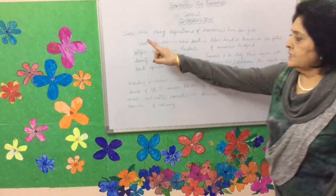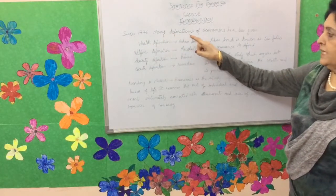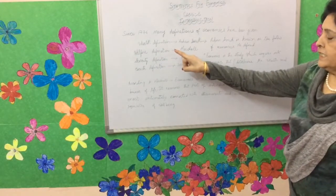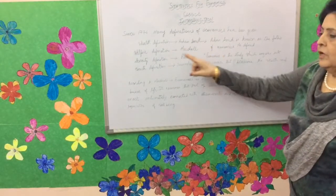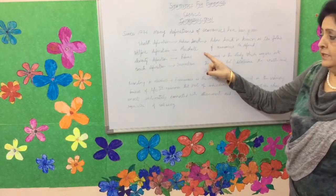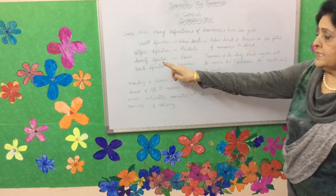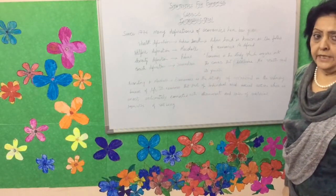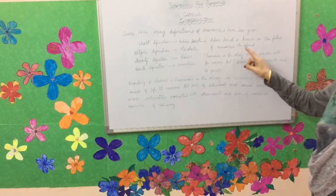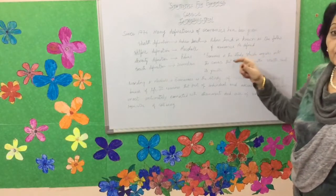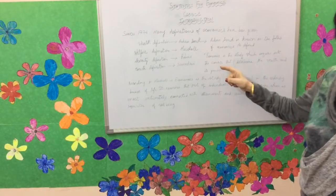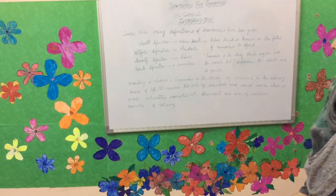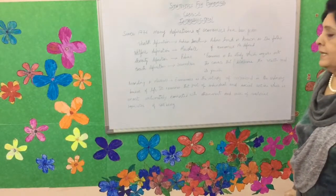Since 1776, many definitions of economics have been given: the wealth definition by Adam Smith, the welfare definition by Marshall, the scarcity definition by Robbins, and the growth definition by Samuelsson. Adam Smith is known as the father of economics. He defined economics as the study which inquires into the causes that determine the wealth and its growth.